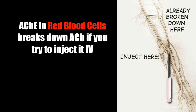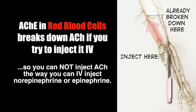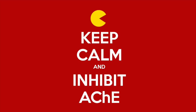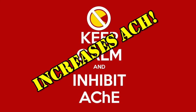The fact that cholinesterase is present in red blood cells makes giving a patient acetylcholine as an injection practically impossible — if you give somebody an acetylcholine injection into their IV, the drug is gone because the red blood cells just break it down. So we had to figure out a trickier way of getting acetylcholine to work. What we can do is inhibit the enzyme that breaks it down, and that gives us system-wide increases in the level of acetylcholine.